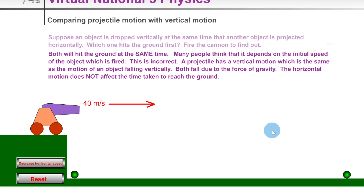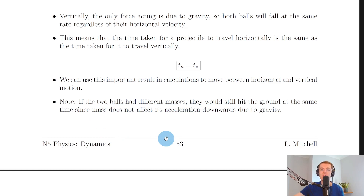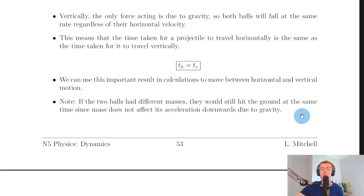It doesn't matter what horizontal velocity an object is projected with — the time taken to fall horizontally will be the same as the time taken to fall vertically. Furthermore, if the two balls had different masses, they would still hit the ground at the same time, since mass does not affect the acceleration due to gravity. It might seem counterintuitive that a heavier object doesn't fall faster, but any object always experiences 9.8 meters per second squared downwards.